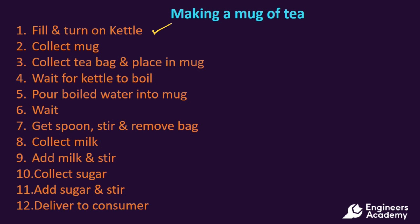We could then go and collect the mug. We could collect the tea bag and place it in the mug. We would then have to wait for the kettle to boil. Once boiled, we could pour the boiling water into the mug. Then we would have to wait for the tea bag to steep in the water to get to the right strength.